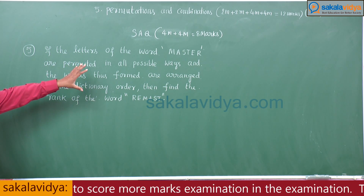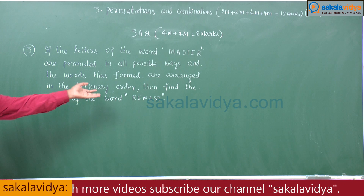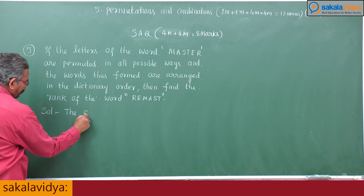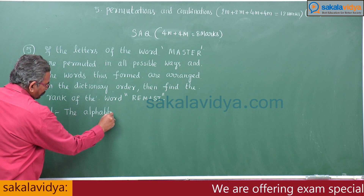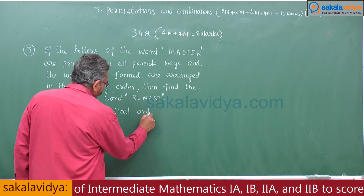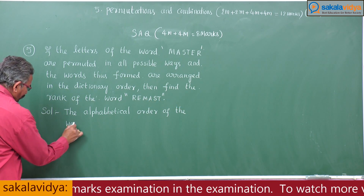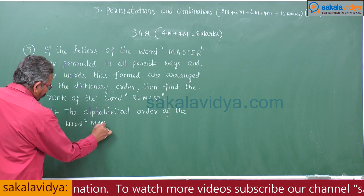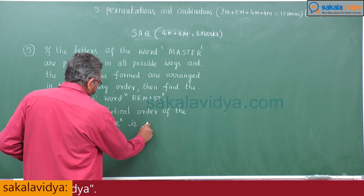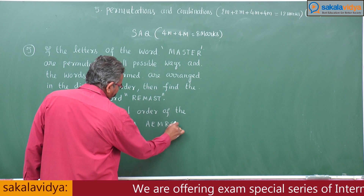First, let us arrange the letters of the word MASTER in alphabetical order. After that, we can find out the rank of the required word. The alphabetical order of the letters in MASTER is: A, E, M, R, S, T.